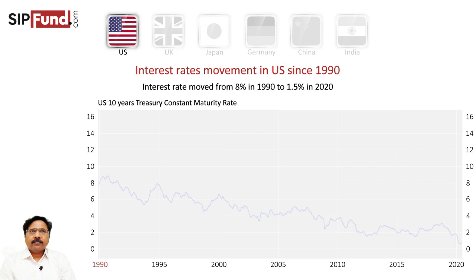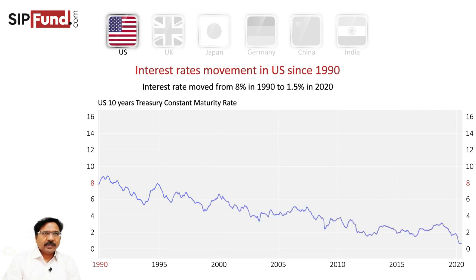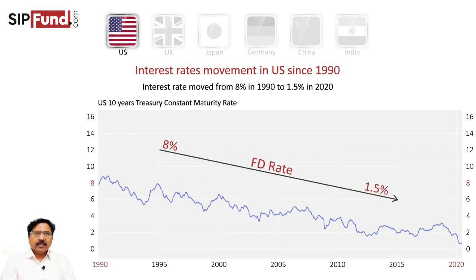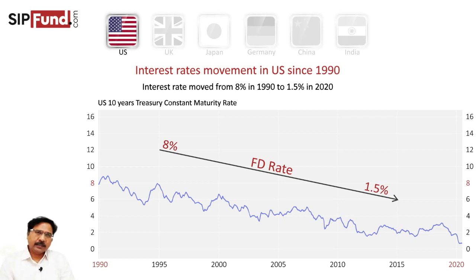If you look at 1990, the interest rates were close to 8%. They moved from 8% to 8.5% to 9%, and then basically came back to 1.51% in 2020. You see there is variation across the period, but still the trend is basically downwards. The FD rates in these countries also more or less follow the Central Bank's yield curve shown here. The fall in interest rates gets reflected in the fall in fixed deposit rates for that country or currency — and this is for the US dollar.